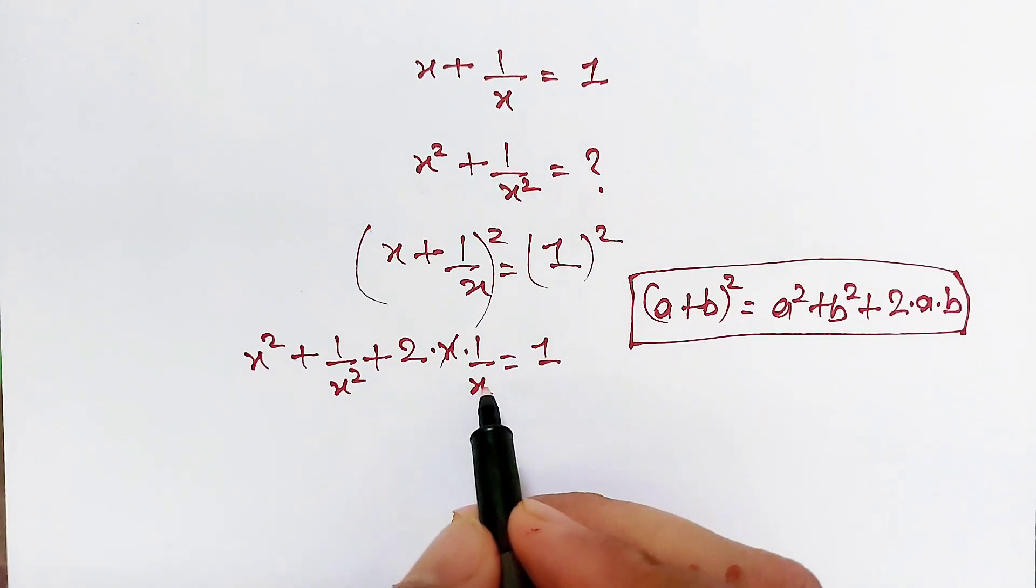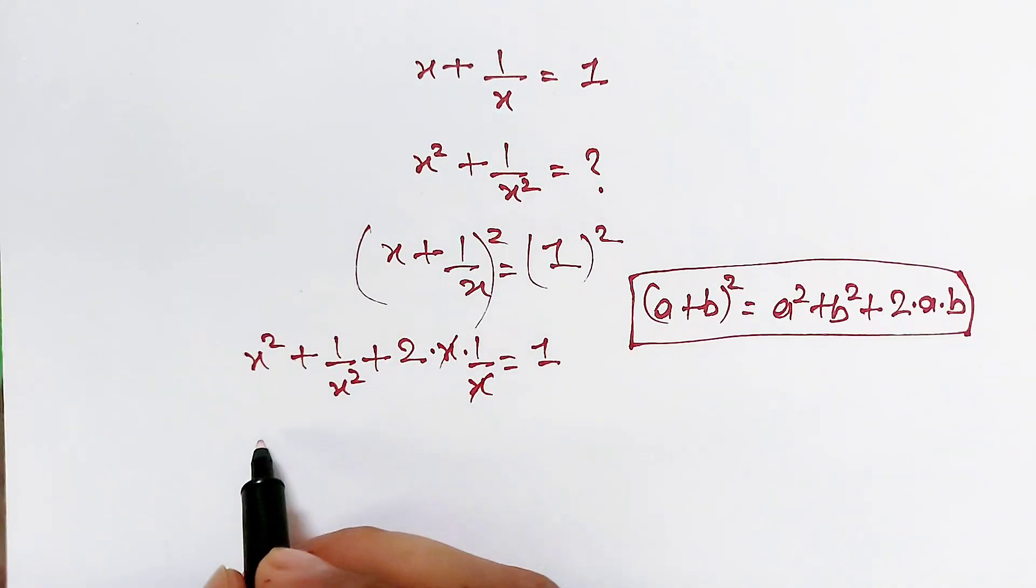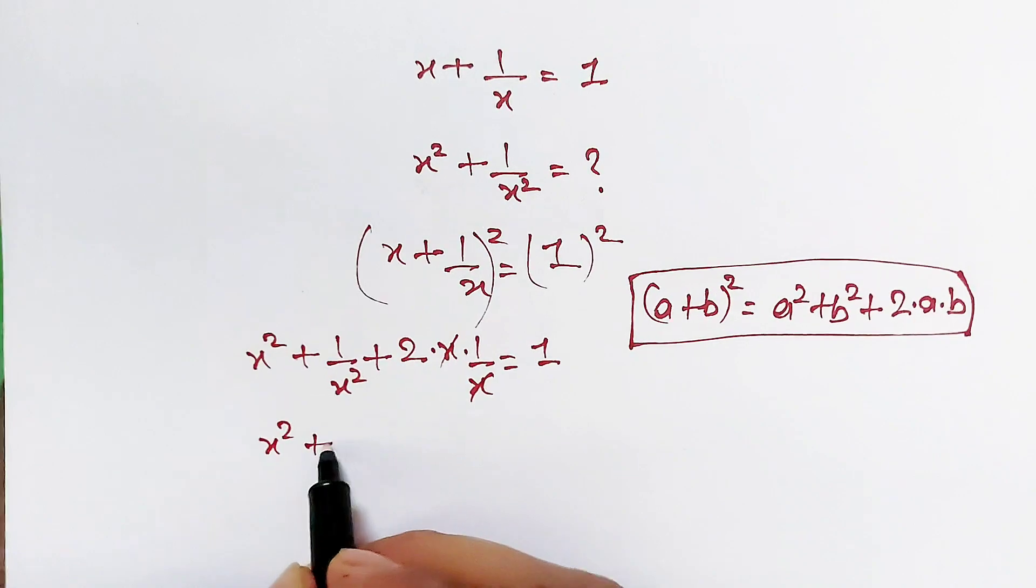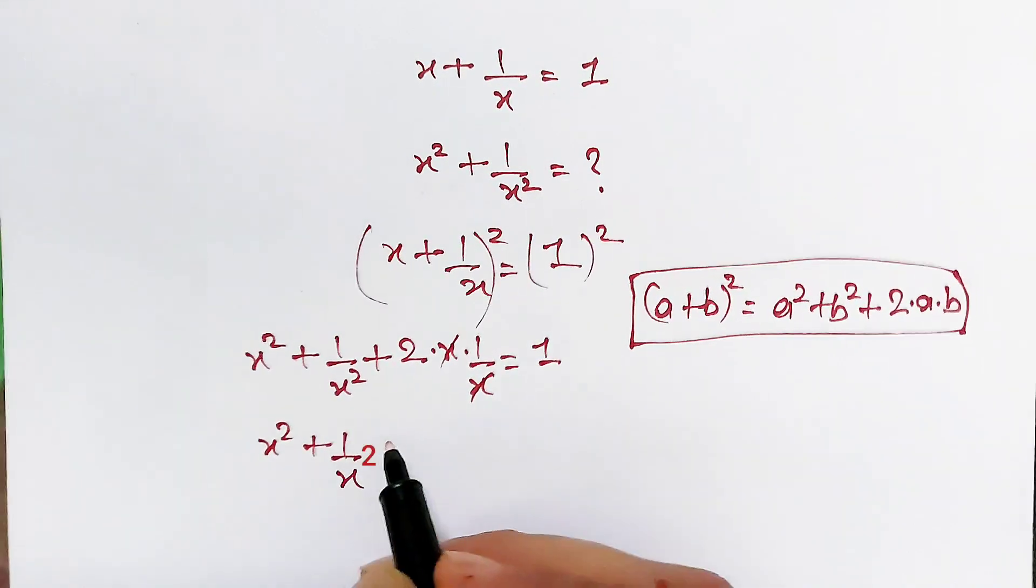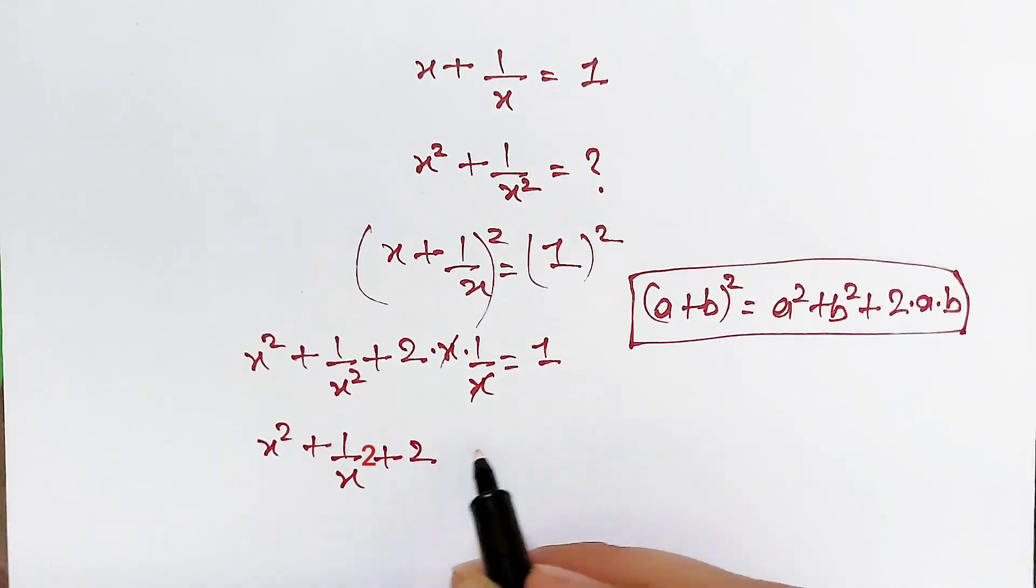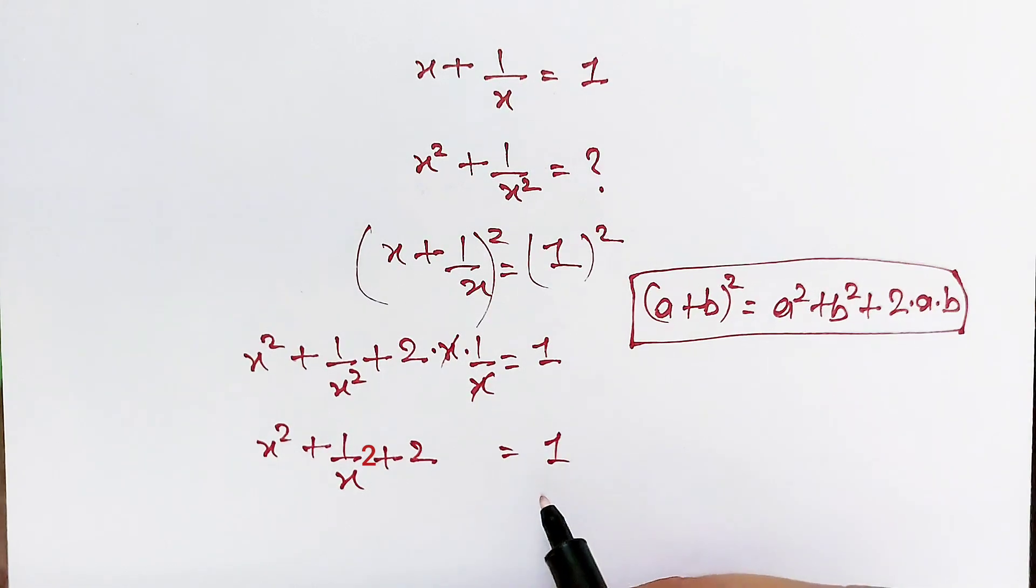Now this x cancels out this x, and x square plus 1 over x square plus 2 equals 1.